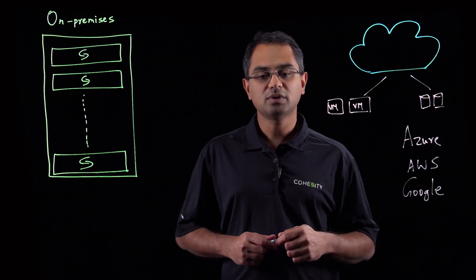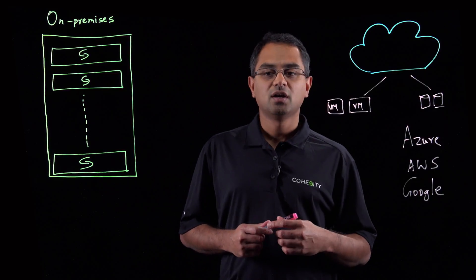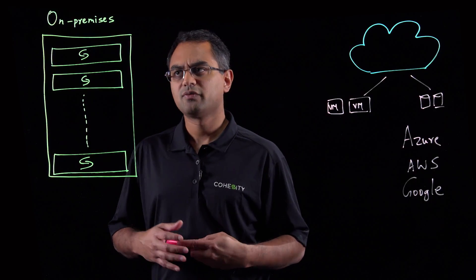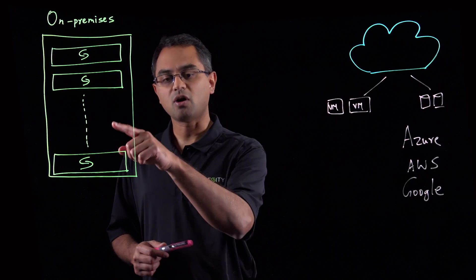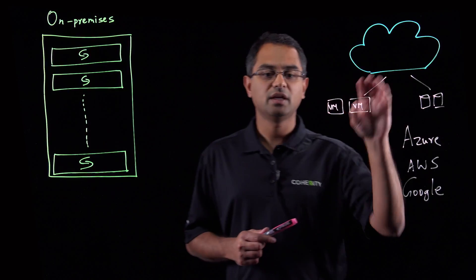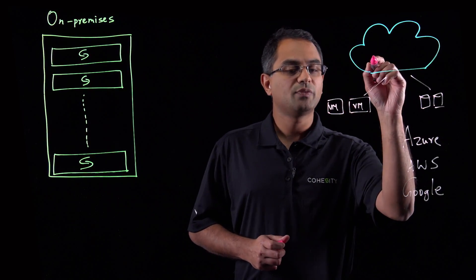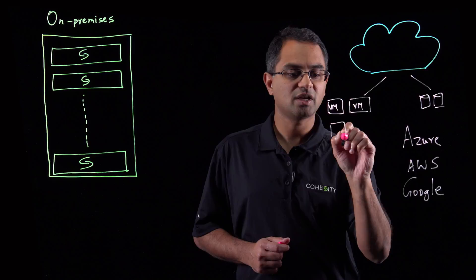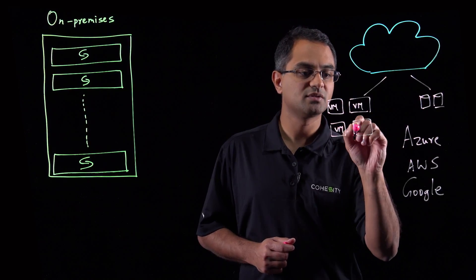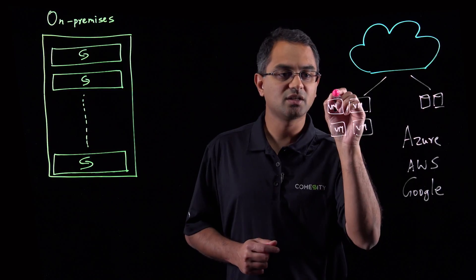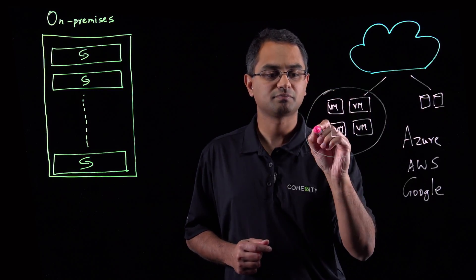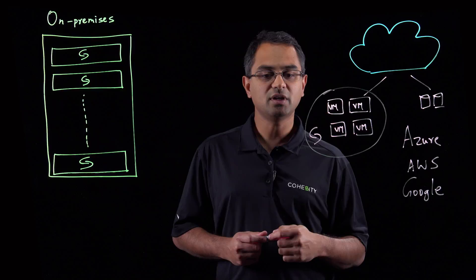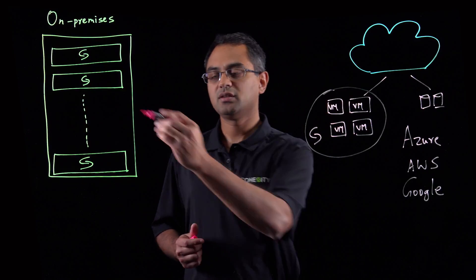The way we do that is through what we call Cohesity Cloud Edition. With Cohesity Cloud Edition, what you already know and use from the Cohesity data platform in the on-premises world is now available and applicable in the cloud infrastructure as well. We leverage the VM resources available in the cloud — let's say four VMs running in the cloud — and these can now form a Cohesity cluster. This cluster has all the same platform features and capabilities you've already seen in the on-premises world.